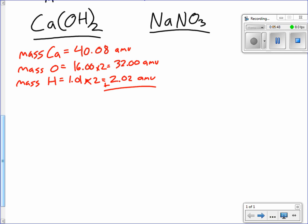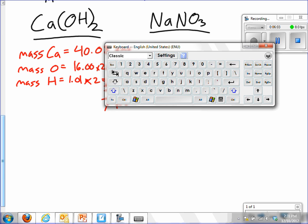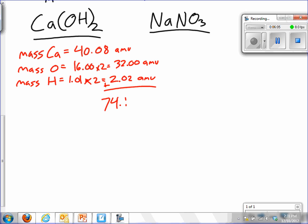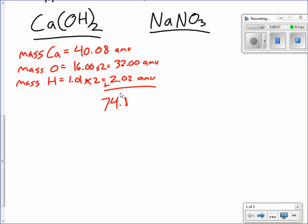Add them all up, and you should get 74.10 AMU. 0.1, I'm sorry. 74.1. This should only be three sig figs, since hydrogen. If you look right here, our measurement for hydrogen only used three sig figs, so our answer will only use three sig figs.